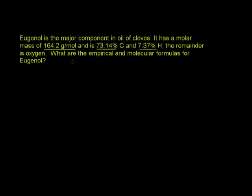As a refresher, the empirical formula is the simplest ratio of the atoms in the molecule, and the molecular formula is the actual number of atoms in the molecule. So let's see if we can figure this out.